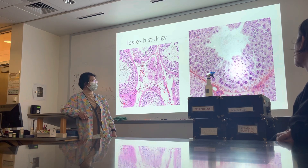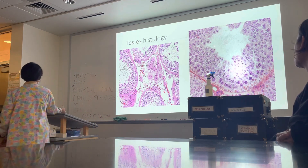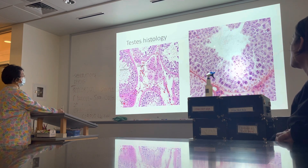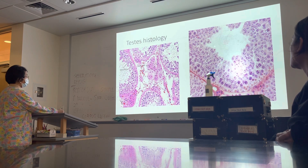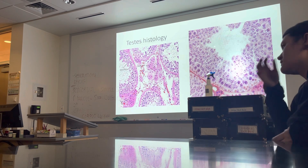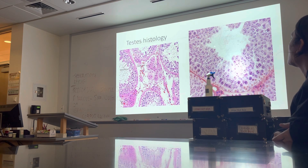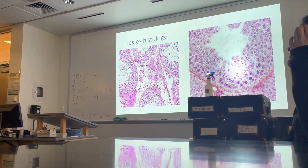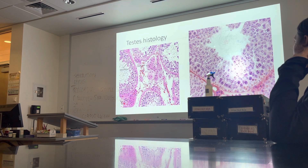Next, you're going to point to the space in between. The space in between is the interstitial space, where you can find the interstitial cells of Leydig, right there. There are red blood cells here — don't point to those. Just point to the interstitial space. The purpose of identifying those two is for you to be familiar with the seminiferous tubule that contains the sperm and Sertoli cells, and the space in between that has the Leydig cells, which use cholesterol to make testosterone. That's it — very easy for the testes slide.